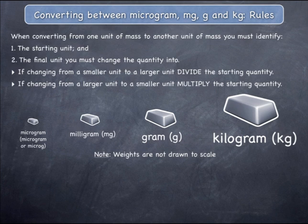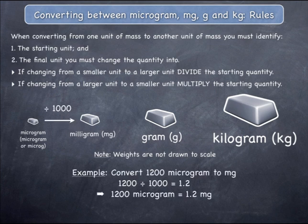Let's start by showing three examples where a smaller unit is changed into a larger unit. If you are changing a quantity from micrograms to milligrams, you must divide the starting quantity by 1000, as the example shows.